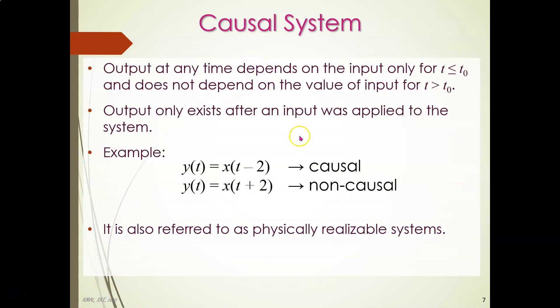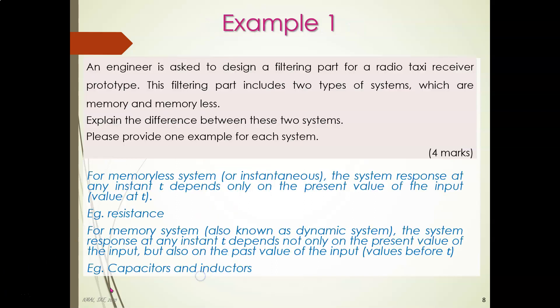Proving whether a system is causal or non-causal is not difficult. When you see a time shift in the signal, if the shift is to the right side of the origin it is causal; if it is to the left side, it is non-causal. This type of question appears in past-year final exams, where students are asked to differentiate between systems — determining whether a signal is memory or memoryless, causal or non-causal, time-invariant or time-varying, linear or non-linear.